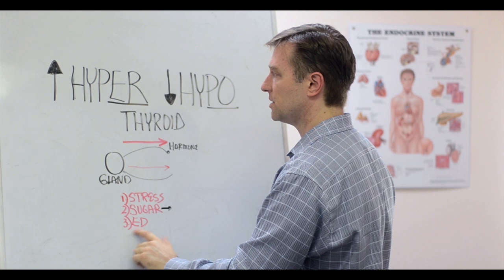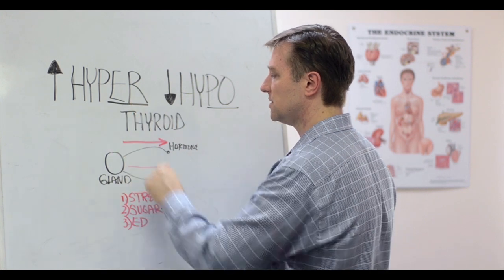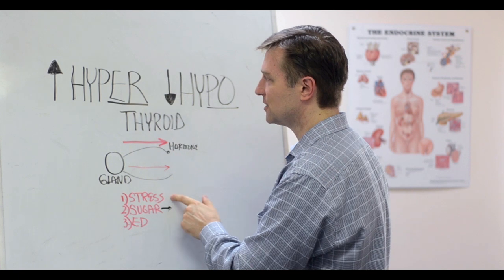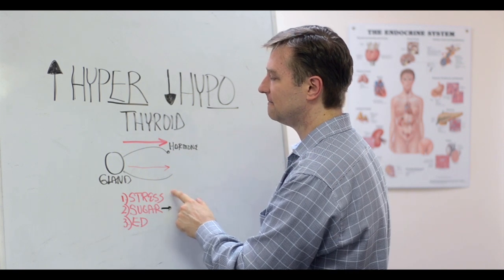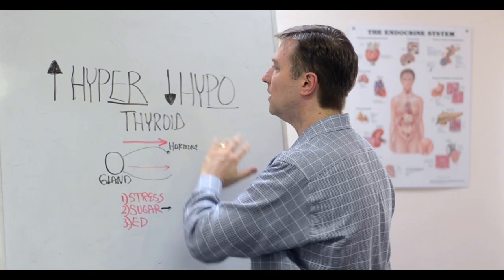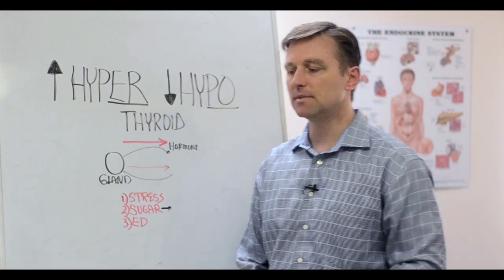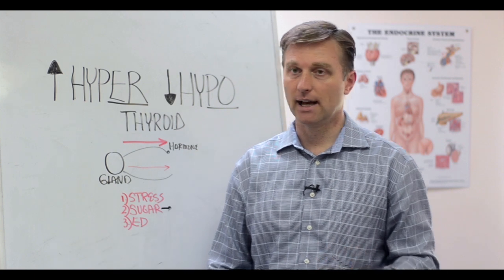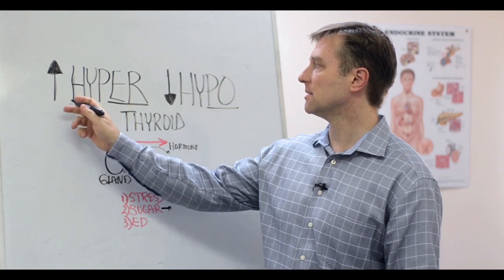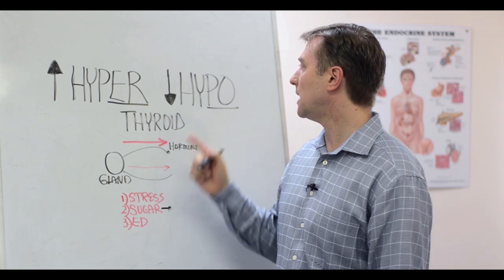So those are the three things that highly influence whether someone's hyper or hypo. Hyper is more of an endocrine disruptor situation unless it's the pancreas and then it's sugar. Well, unless it's the adrenal and then it's stress. But the point is that any one of these can either make you hyper or hypo. And you just have to do this one last technique to figure it out.